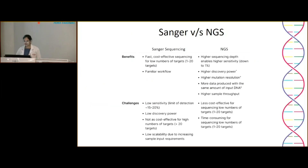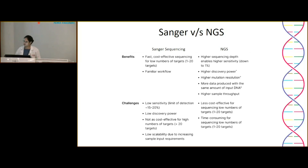Comparing Sanger and NGS: NGS gives sensitivity up to 1%, whereas Sanger is only 20%. NGS has high discovery power, high mutation resolution, produces more data from the same DNA amount, and has higher sample throughput. However, NGS is less cost-effective when you have fewer than 20 targets, and becomes time-consuming for lesser targets.